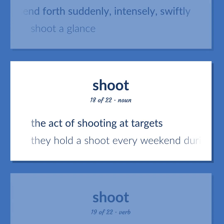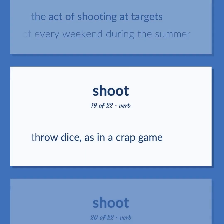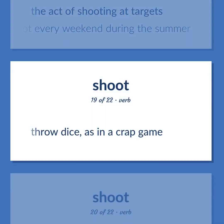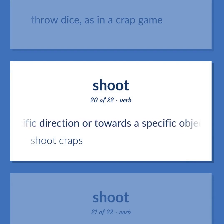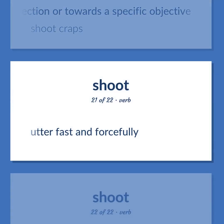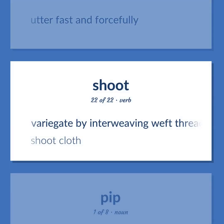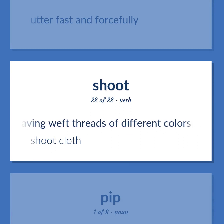Shoot: The act of shooting at targets — they hold a shoot every weekend during the summer. Throw dice, as in a crap game. Throw or propel in a specific direction or towards a specific objective — shoot craps. Utter fast and forcefully. Variegate by interweaving weft threads of different colors — shoot cloth.